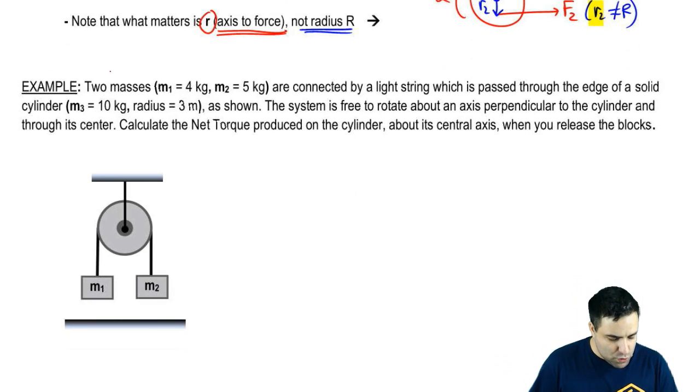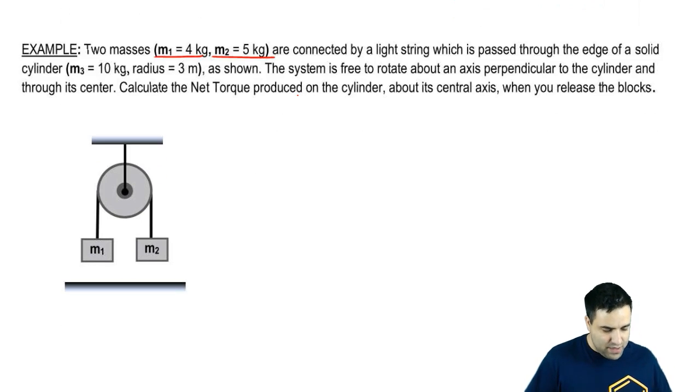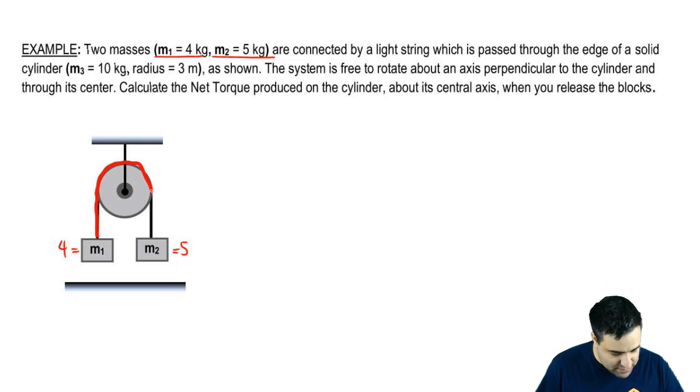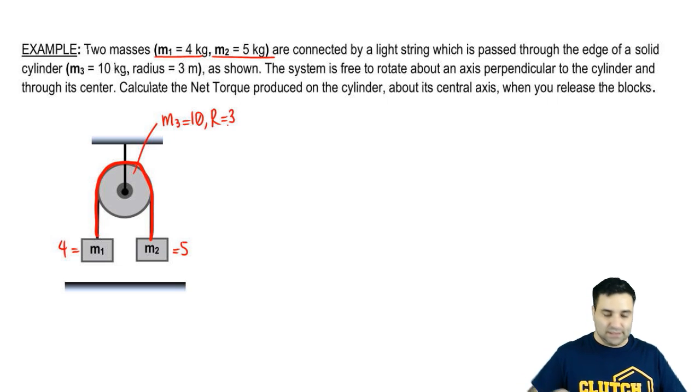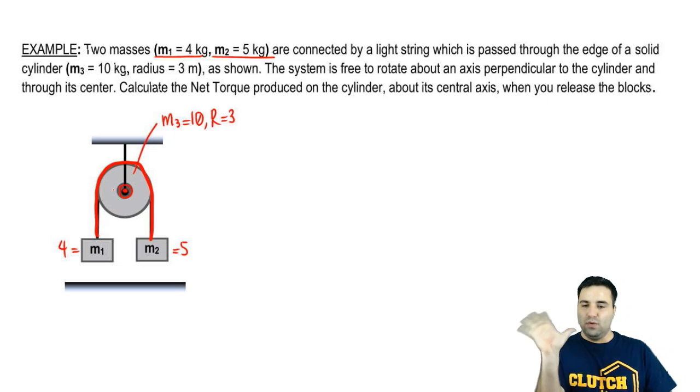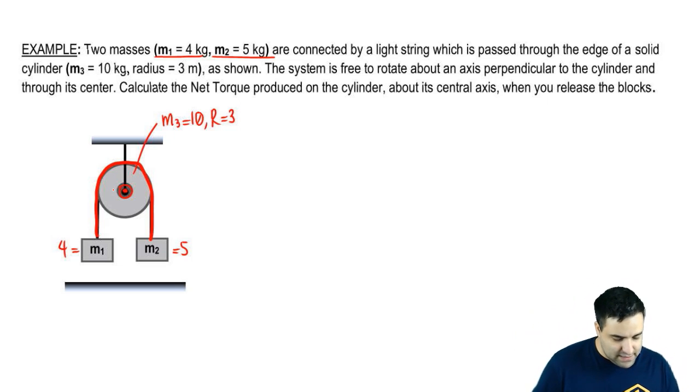Let's do an example here. So two masses, M1 and M2, M1 is 4, M2 is 5, are connected by a light string which passes through the edge of a solid cylinder. So there's a string here that goes like this, wraps around the cylinder. The cylinder has mass M3 equals 10 and radius, remember radius is big R, little r is distance. The system is free to rotate about an axis, so the system can spin around an axis that is perpendicular to the cylinder. Perpendicular to the cylinder means that it makes a 90-degree angle with the face of the cylinder. To the cylinder and through its center. So basically, the cylinder spins around its central axis.